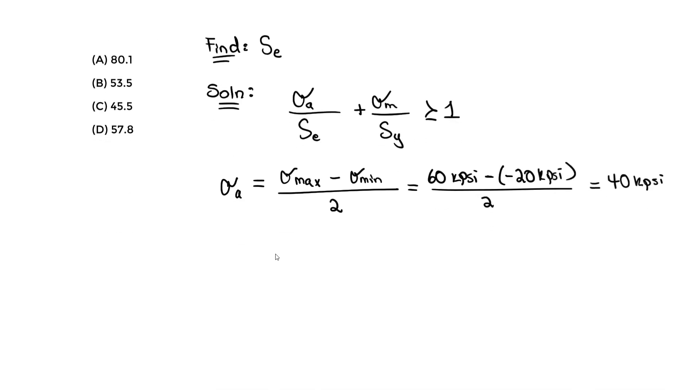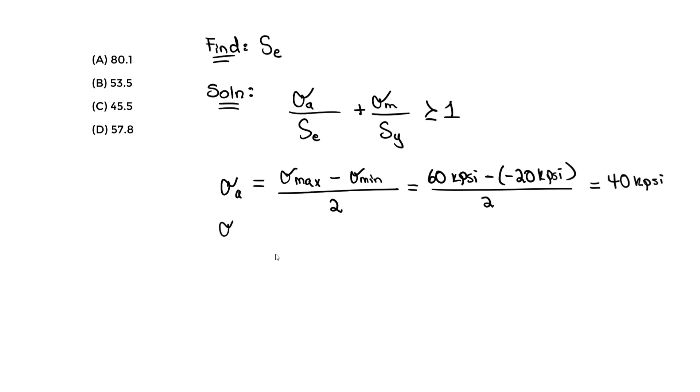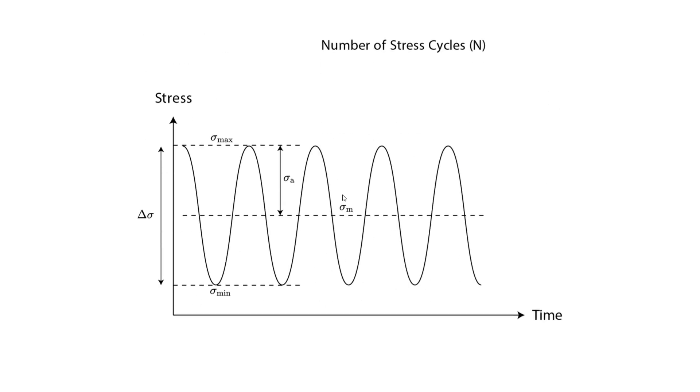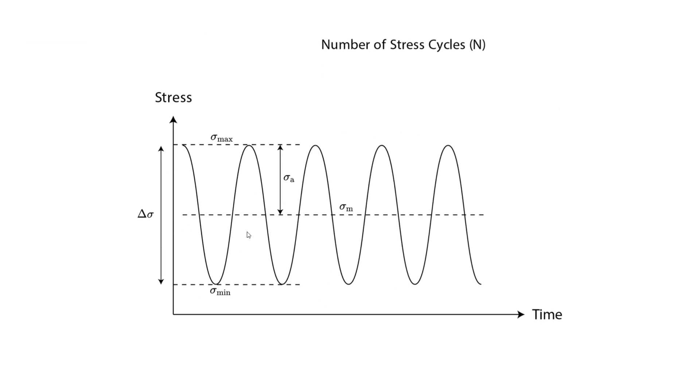Now we find sigma_m. For that one, it's the mean—it's at the middle. We just take the top value plus the bottom value, divide by 2, and we get the average in the middle.